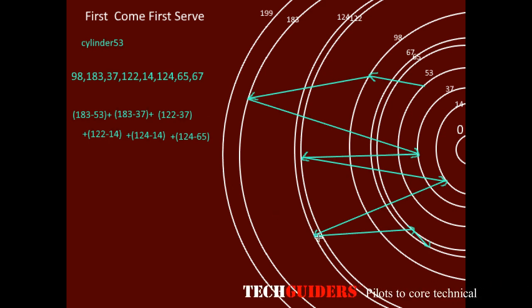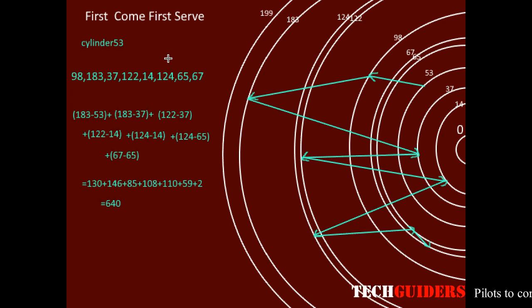And from here to here 124 minus 65 plus 67 minus 65, the total about 640 cylinders have to be crossed by the read-write head to process all these requests and the seek time is proportional to the number of cylinders crossed.